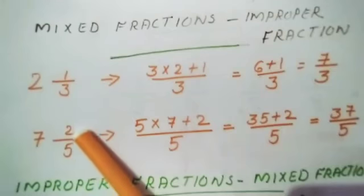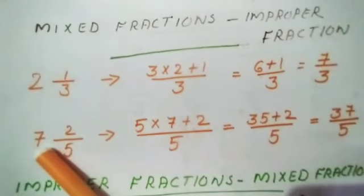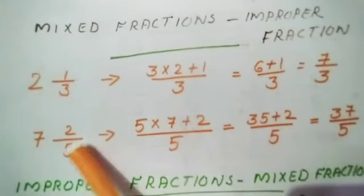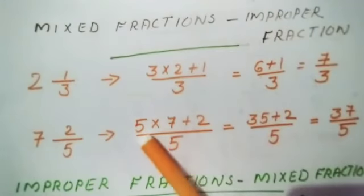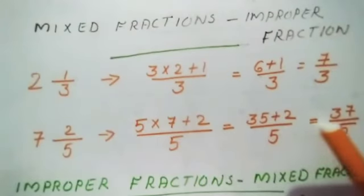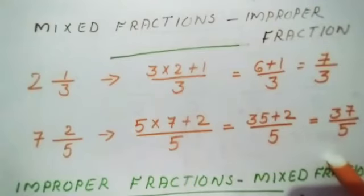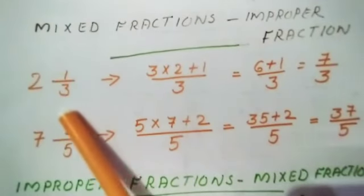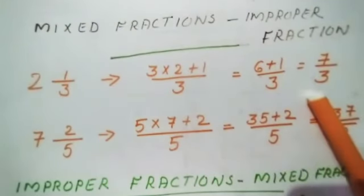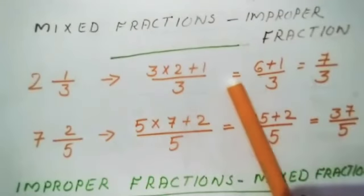Another example: 7 and 2/5. Using the same method — denominator multiplied by the whole number, plus the numerator: 5 × 7 + 2 = 35 + 2 = 37. So the answer is 37/5. The denominator always stays the same; only the numerator changes.